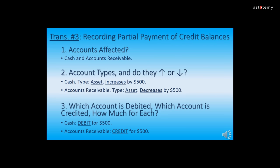Now let's go through the steps to record transaction three, recording partial payment of credit balances. Number one: the two accounts affected are Cash and Accounts Receivable. Number two: Cash is an asset type and it will increase by $500. Accounts Receivable is also an asset type and it will decrease by $500 — remember, when you have two of the same type of account, one will increase and one will decrease. Number three: Cash will be debited for $500 since it's increasing. Accounts Receivable will be credited for $500 since it will be decreasing.